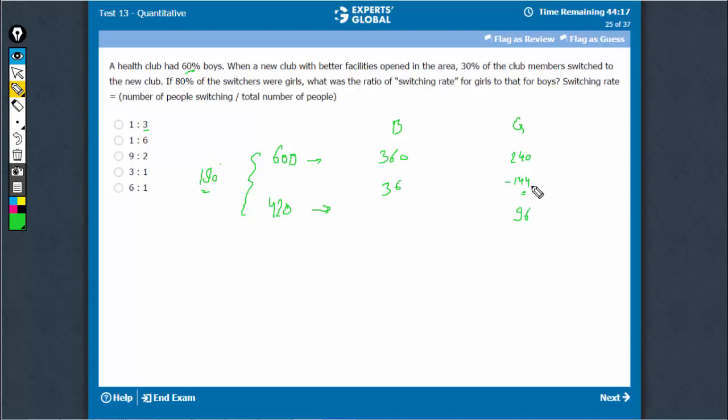Now, let's come to the switching rate. For girls, the switching rate is 144 upon 240, which is 0.6.